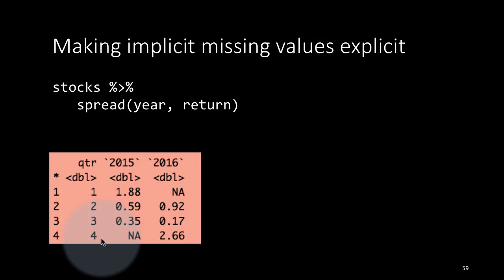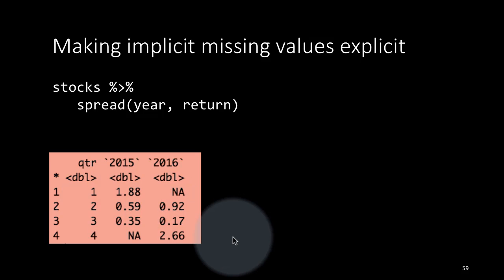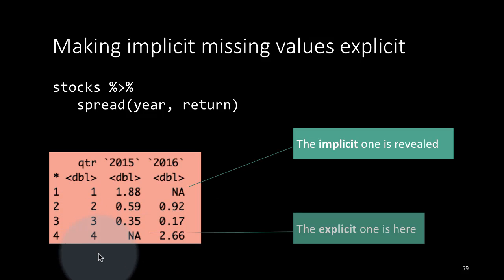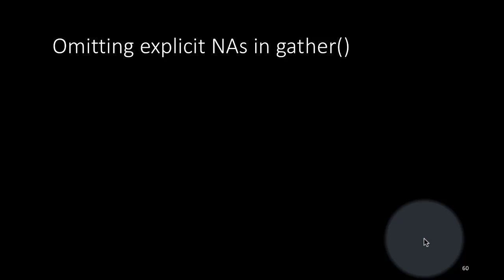The year has two values 2015-2016 and puts the returns into the cells. Now notice that this is the explicit missing value, fourth quarter of 2015. This is the implicit missing value, the first quarter of 2016, that has now got revealed as a result of this spreading operation.